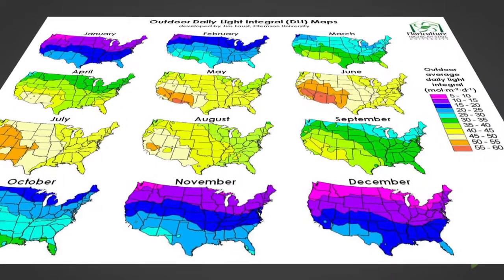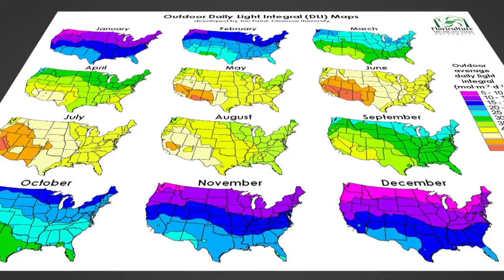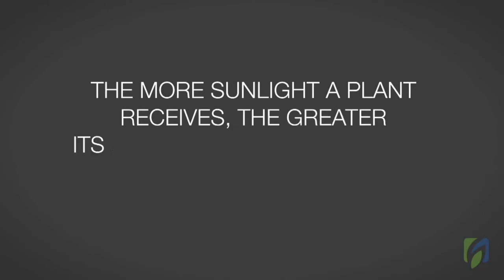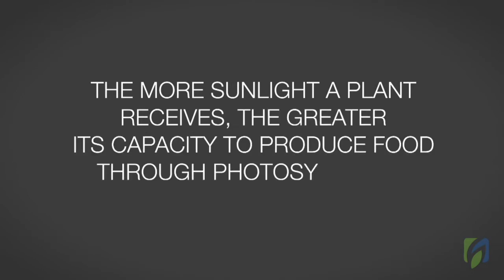The maximum amount of light in the northern hemisphere, which includes the United States, is present during summer months. Up to a point, the more sunlight a plant receives, the greater its capacity to produce food through photosynthesis.